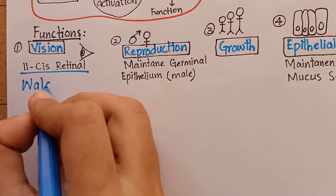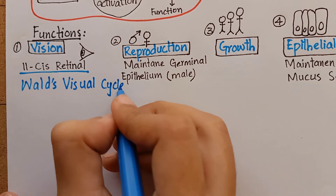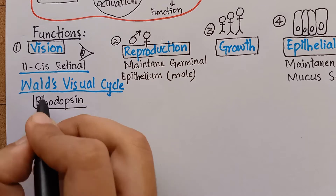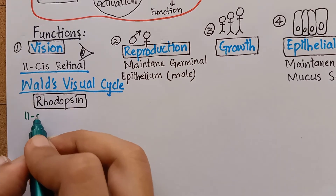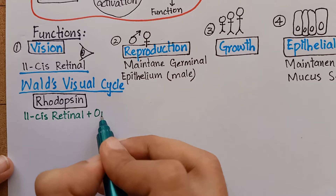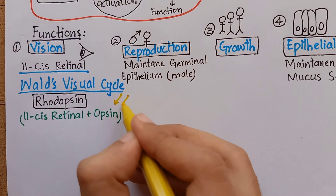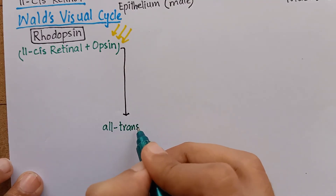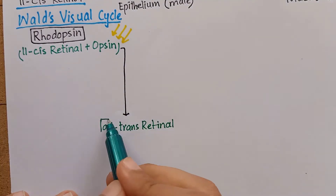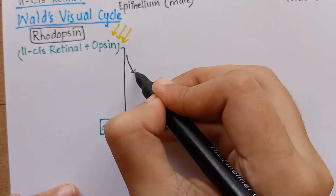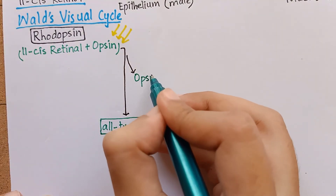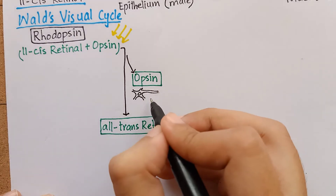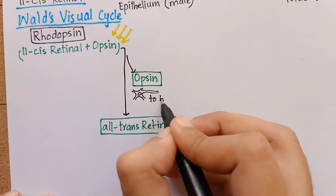Coming back to the role of vitamin A in vision: rhodopsin, which is a visual pigment of rod cells in the retina, consists of 11-cis retinal and a protein called opsin. When the eye is exposed to light, the 11-cis retinal component of rhodopsin is isomerized to all-trans retinal. This conversion leads to a structural change in opsin, which triggers a nerve impulse that is transmitted along the optic nerve to the brain.